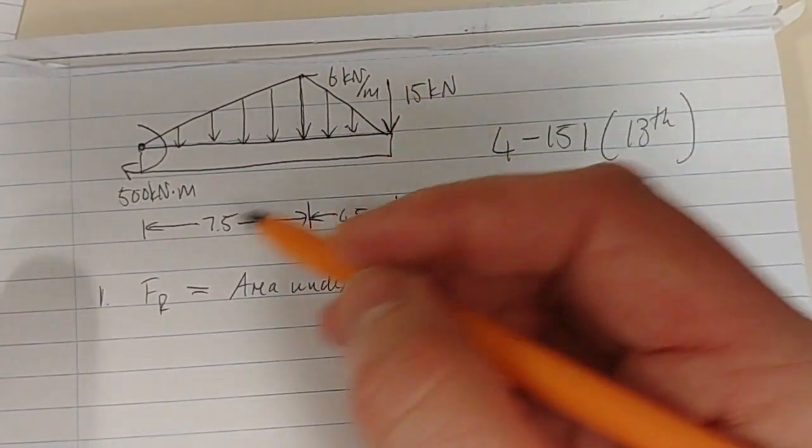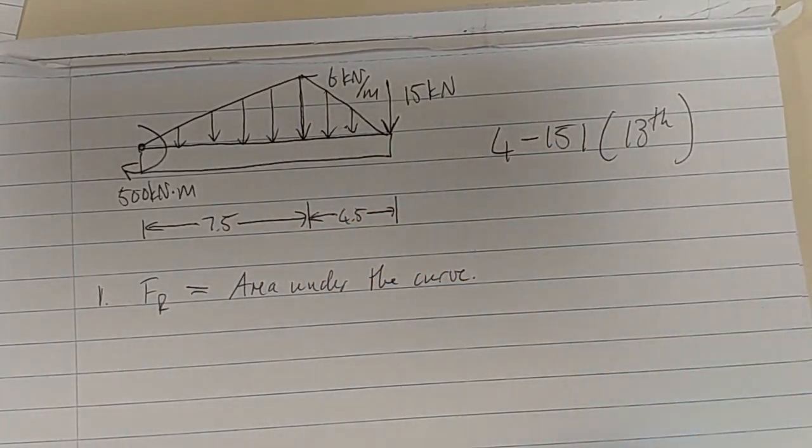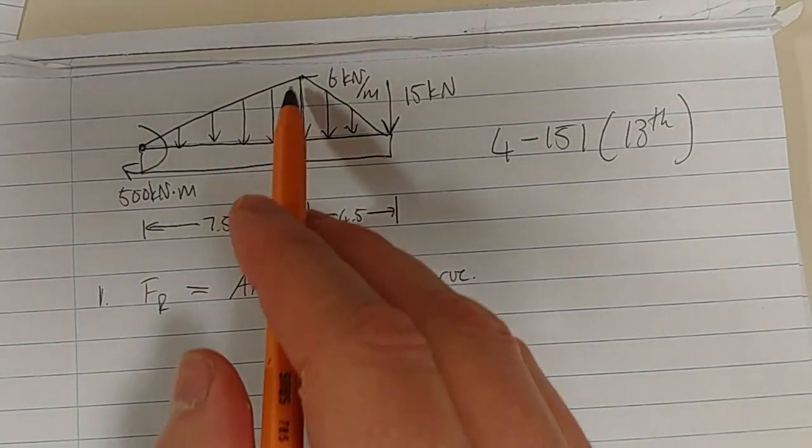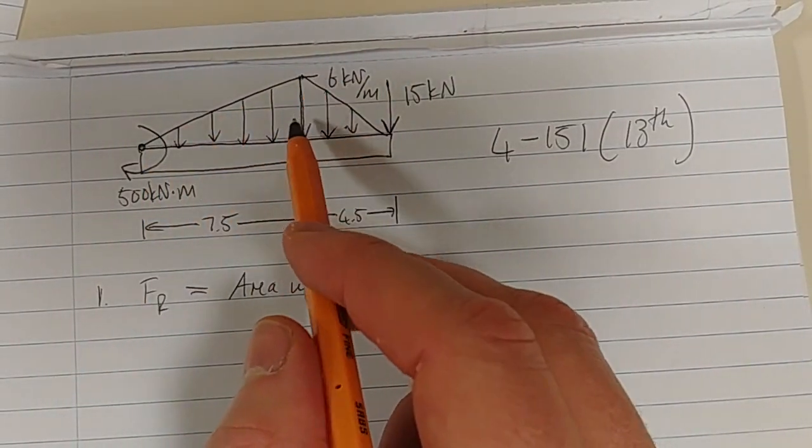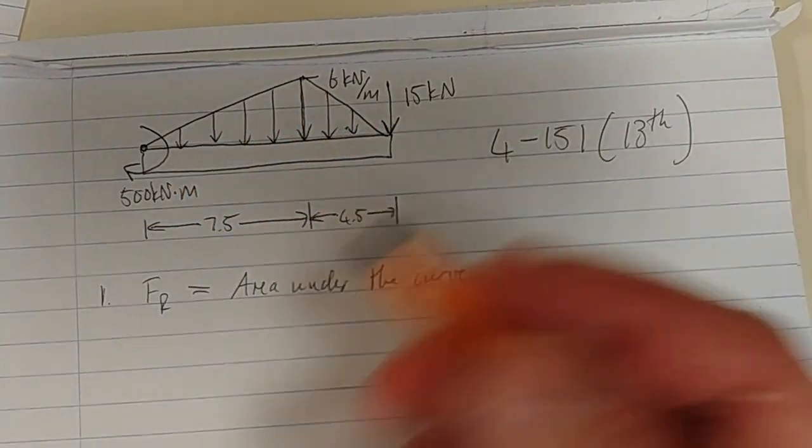So that's the first thing: the resultant force FR of a given geometry, a given area, is the area under the curve.